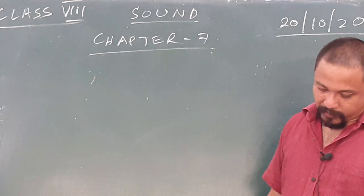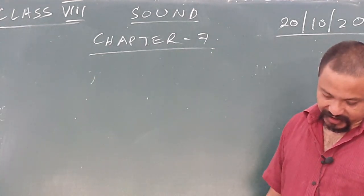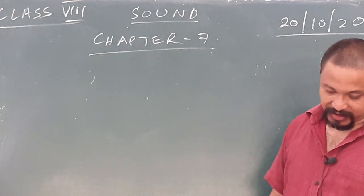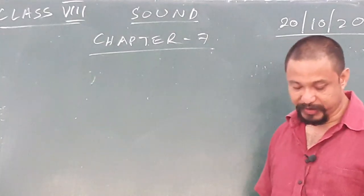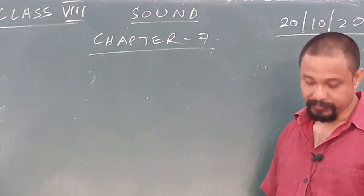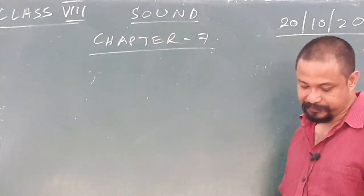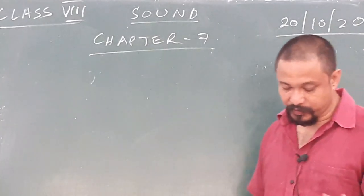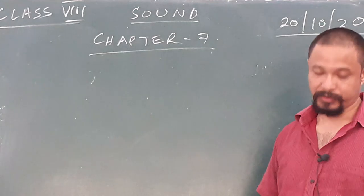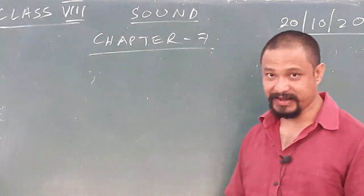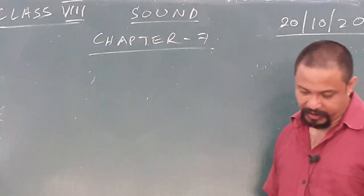The book says each sound we hear is a unique combination of three characteristics, which are loudness or intensity, pitch, and quality or timbre. These are the things on which a sound depends. The whole basis of sound is based on these things only.